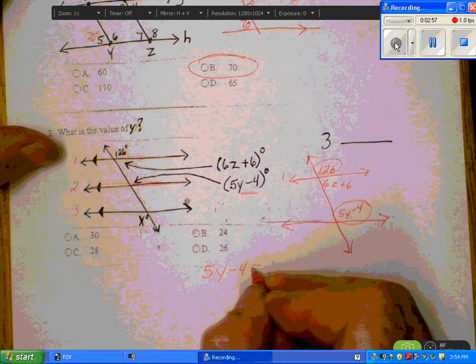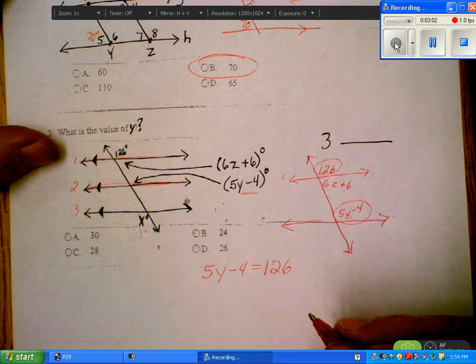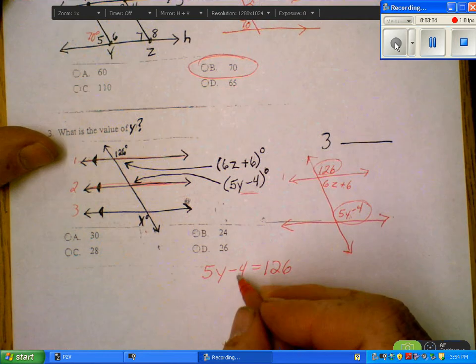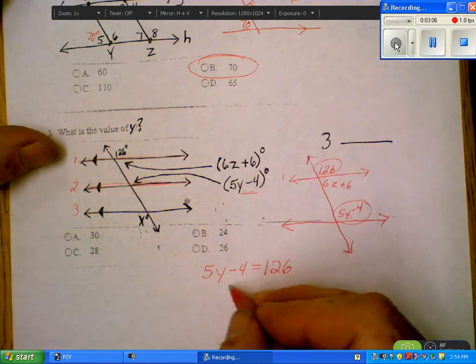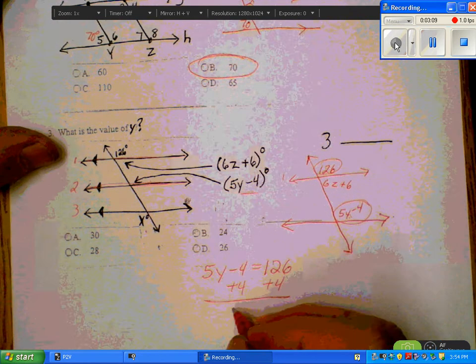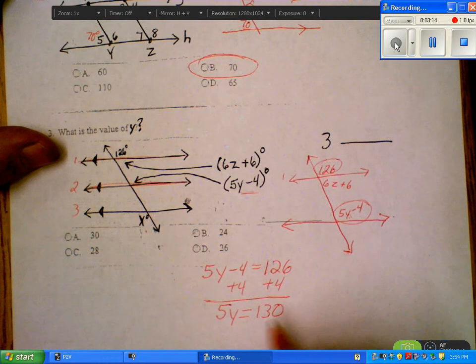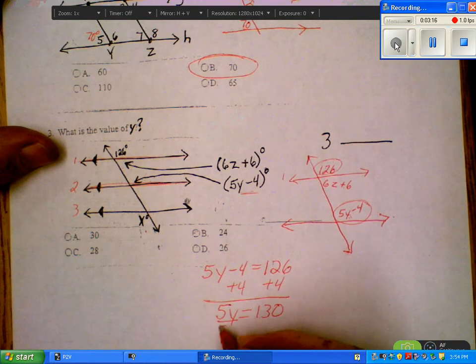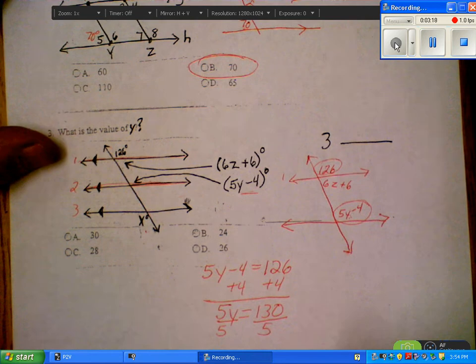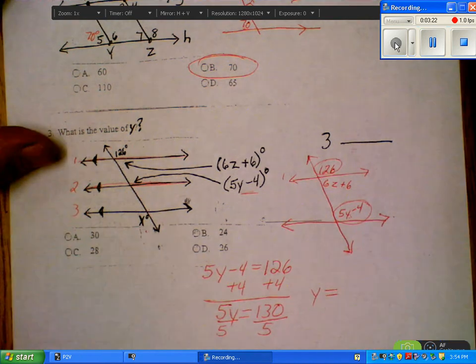5Y minus 4 has to equal 126. Add 4 to both sides. 5Y equals 130. Divide both sides by 5. That's going to give your answer what Y equals.